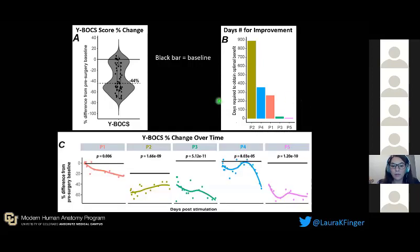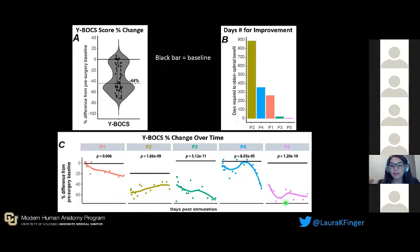On this graph, we have each patient broken down with days post-stimulation since first turning on DBS and percent change from baseline. The black bar represents baseline, and anything away from it is a percent change. Every patient has had a percent decrease in OCD symptom severity, which is again significant because these are patients that did not respond to treatment before.